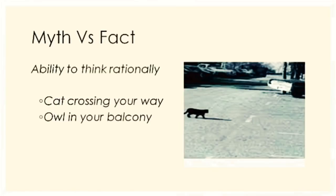Myth versus fact — the ability to think rationally is the first stage if we have a scientific attitude. A cat crossing your way or an owl in your balcony are some of the bad omens we have come across. In the NIO booklets, there is an example of Gopal and his father moving to the market. On the way, a cat crossed their path, and the father immediately stopped Gopal and asked him to move seven steps back. Gopal was confused about how a cat crossing the road and moving seven steps back would help, but he did not question his father.